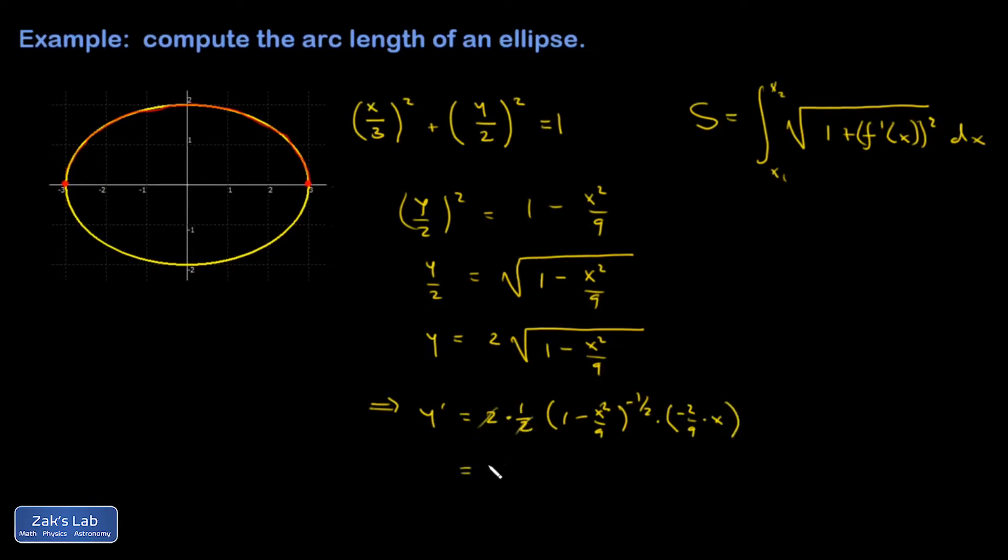Clean things up a little bit. So if I get negative 2x over 9, maybe I'll put the square root in the denominator here. 1 minus x squared over 9. And so now in this integral, I have to square that thing.